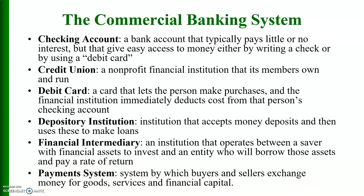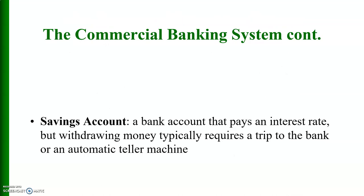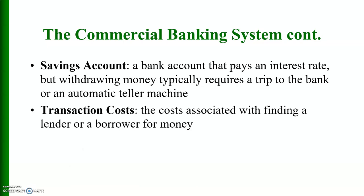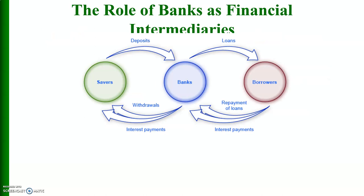A payment system is a system by which buyers and sellers exchange money for goods, services, and financial capital. In the commercial banking system, a savings account is a bank account that pays an interest rate but withdrawing money typically requires a trip to the bank or an ATM. Transaction costs are the costs associated with finding a lender or borrower for money — this is the role of banks as financial intermediaries.